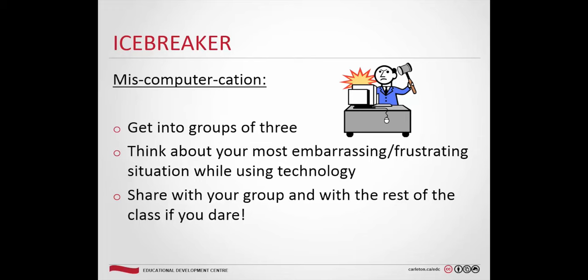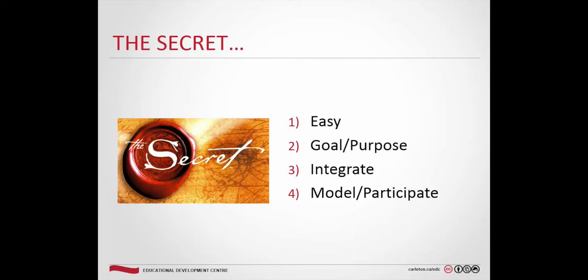This is a good example of why you need to have clear instructions. So here's the secret: make it easy, it needs to align with your goal and purpose, it needs to be integrated with your course, and then model or participate — make it very evident to students what they need to do. Lay it out explicitly. There's always some kind of confusion — like the midnight issue — so be very explicit and make sure it's laid out for the students.